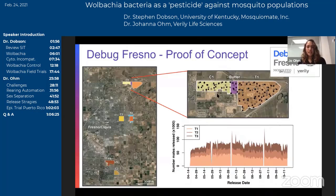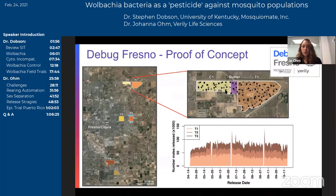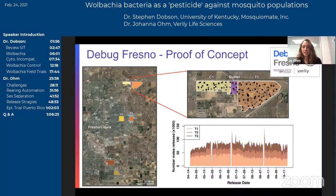I'll give an overview of our results from DEBUG Fresno, which was our first field trial. We started in 2017 and continued throughout the field season in 2018. On the left is a map of our treatment and control sites. We selected three treatment sites — T1, T2, and T3 — and three geographically matched control sites — C1, C2, C3. We carefully selected these sites to have controls and treatments that were matched geographically and similar in the number of households and mosquito populations. In all treatment and control sites, we had extensive trapping: BG sentinel traps (black dots) that collect wild females, and ova traps (gray dots). T1 and C1 were close together, so we also had a buffer zone between them where we trapped but did not release mosquitoes.